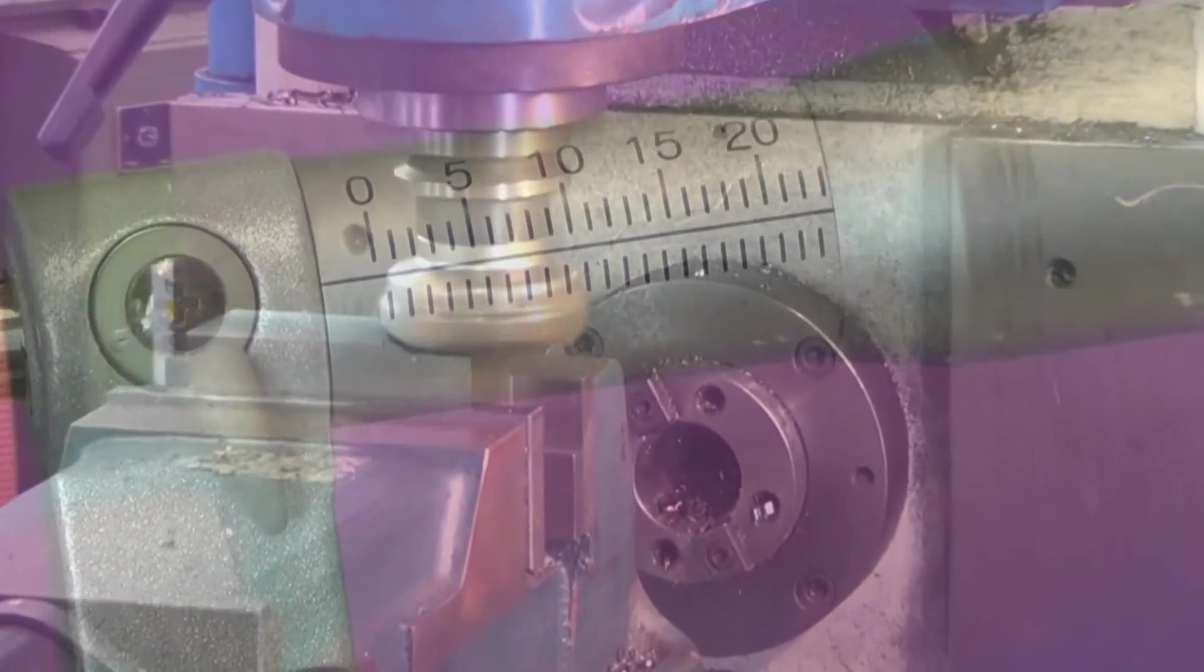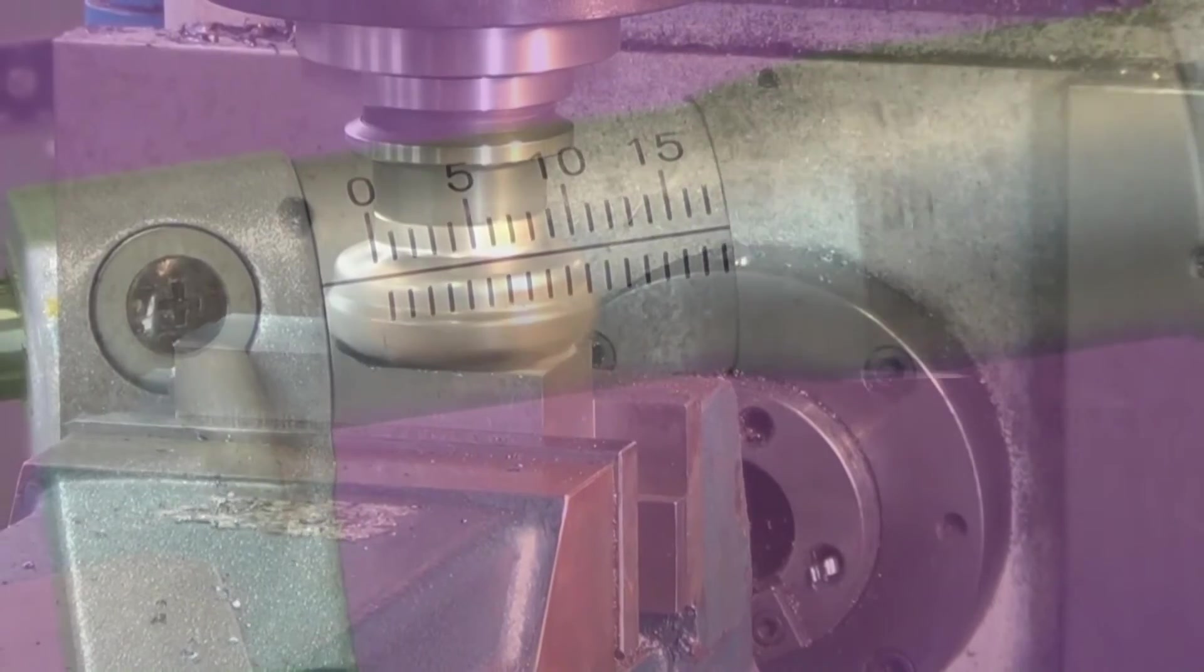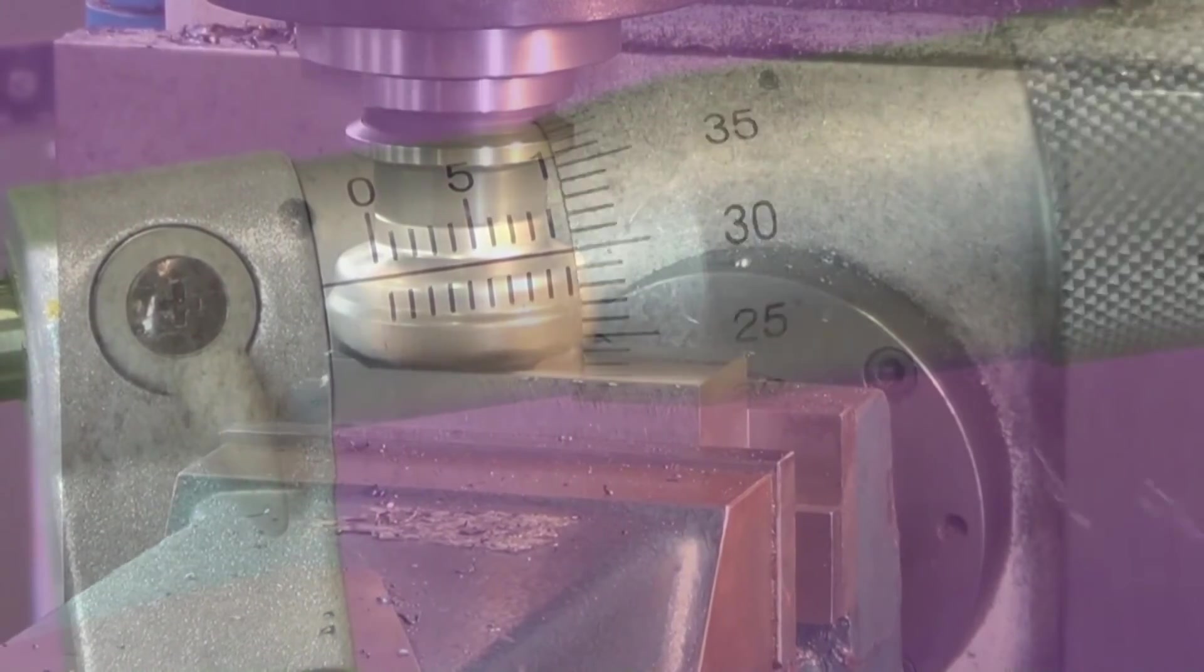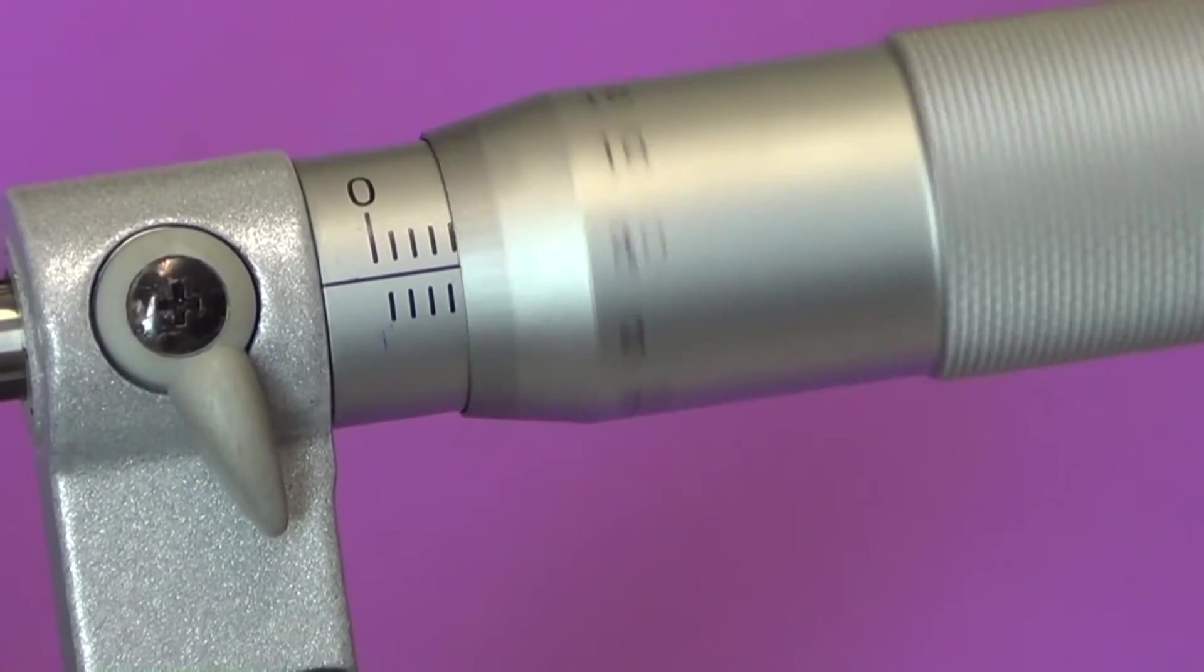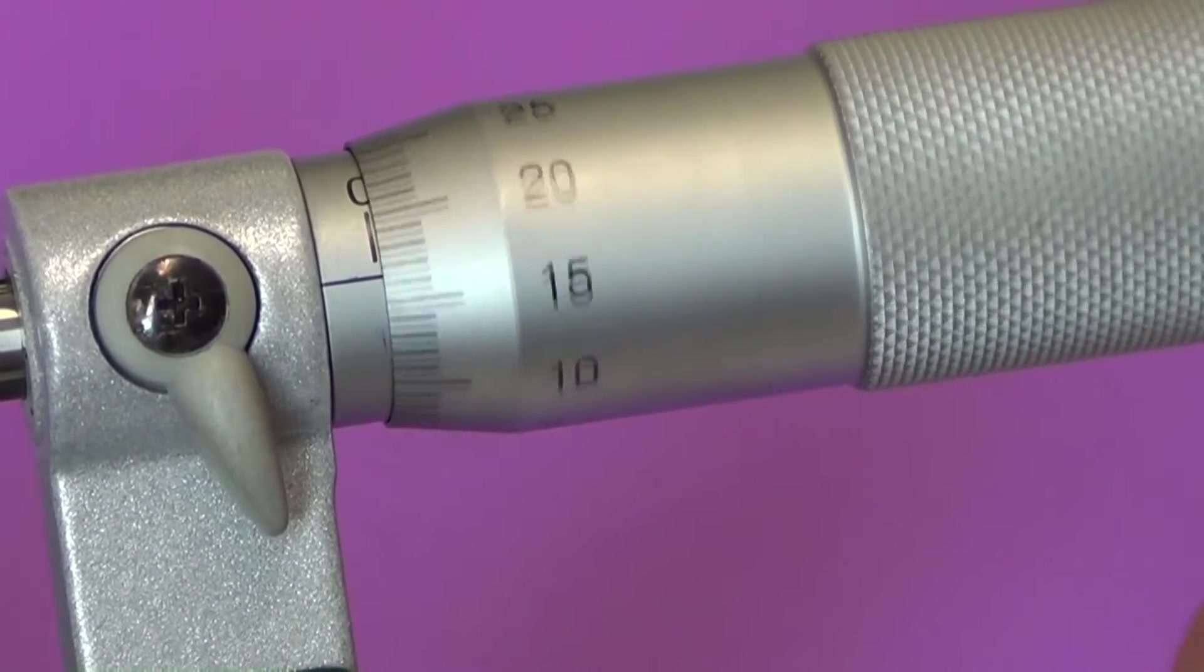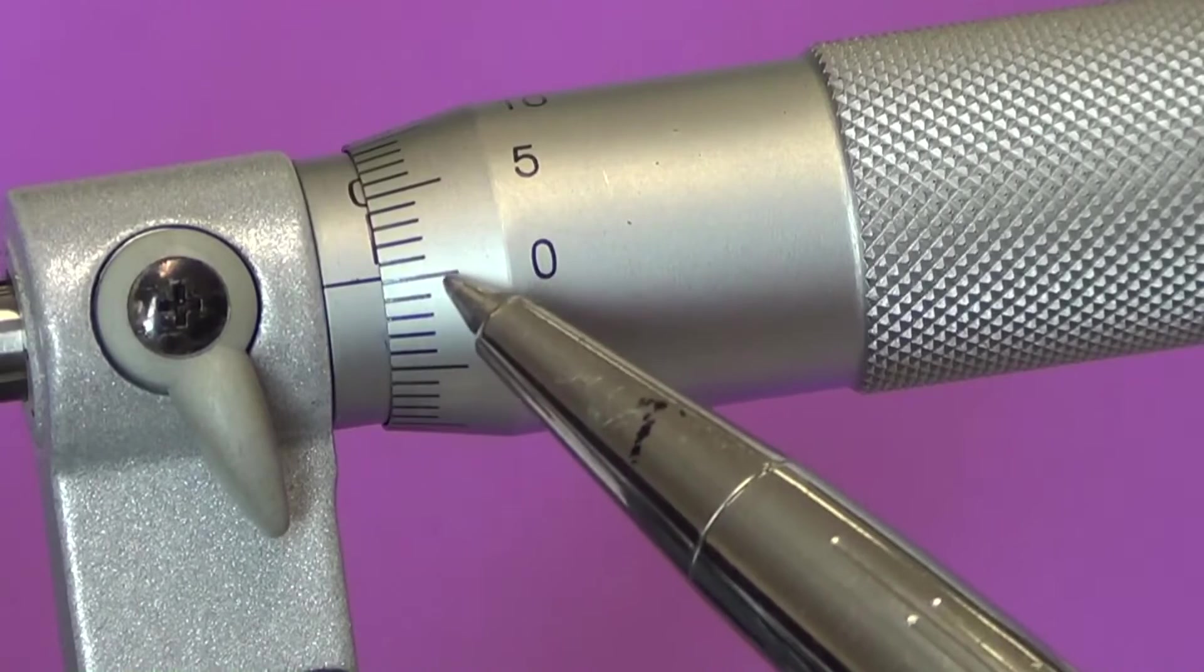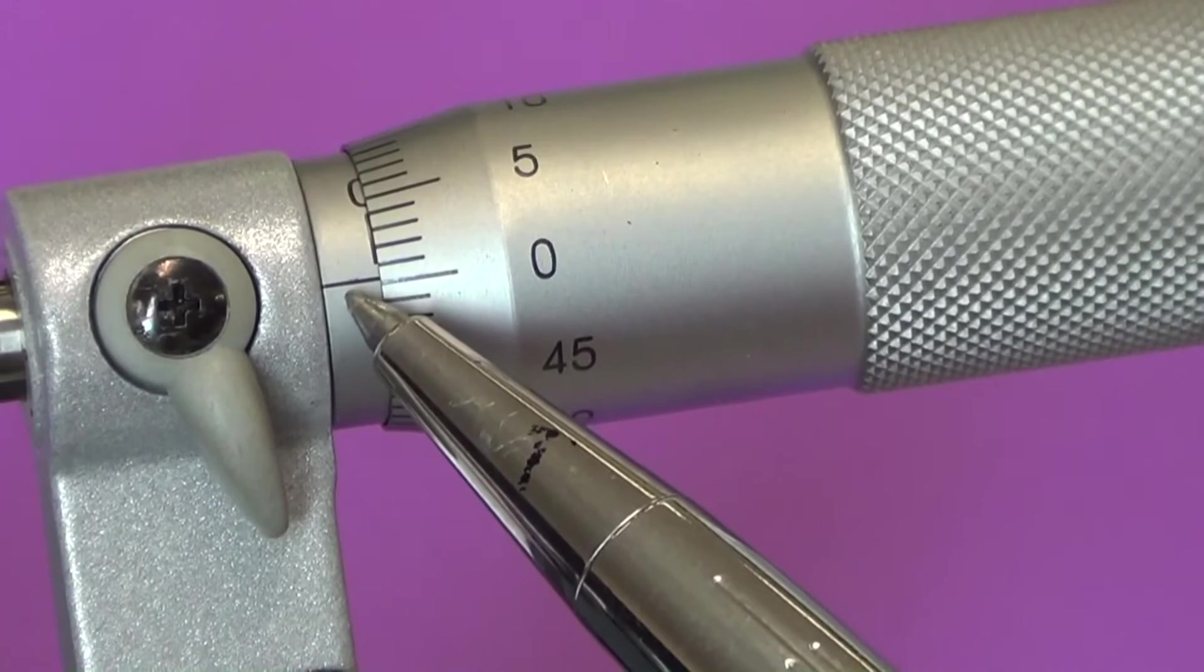Here we see the thimble, and when we spin the thimble around one complete revolution, it passes through fifty divisions, as we'll see in a minute. Each one of those divisions is equal to one hundredth of a millimeter. Screwing the thimble down like this will bring the two anvils together, and should bring the zero on the thimble adjacent to the zero on the horizontal line.